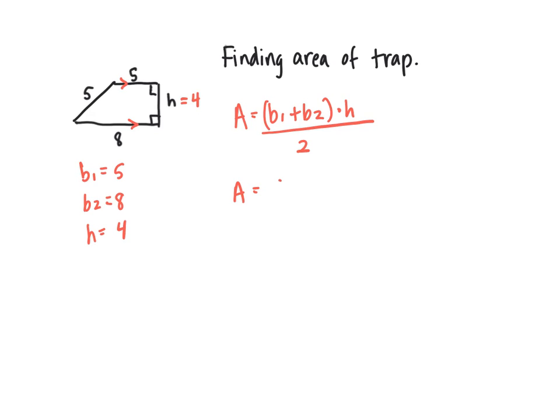So b₁ we said is 5, b₂ is 8, divided by 2, and then my height is 4. I typically like to cancel here and reduce if I can. Two goes into four twice, so then I'm left with 5 plus 8 times 2.